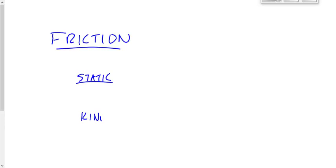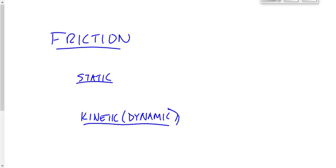which we also called dynamic friction — and I also call it sliding friction, because it helps us to distinguish what's going on. Kinetic or dynamic or sliding friction is the friction that resists the motion of an already moving object. So, static friction is the force that keeps an object from beginning to move, and kinetic friction is the force that tries to stop an object that is already moving.